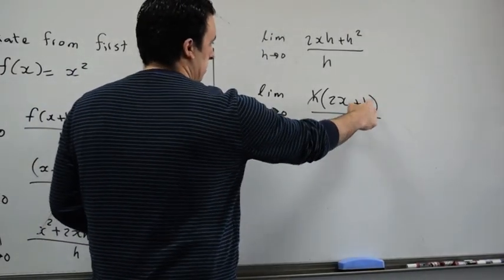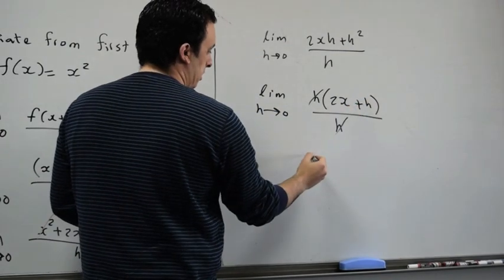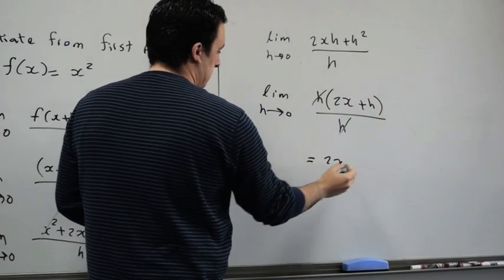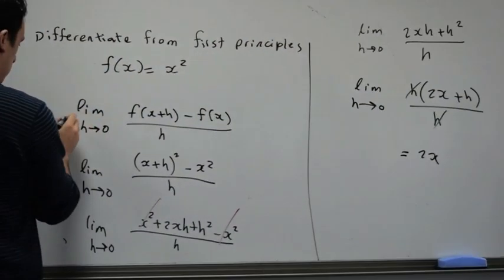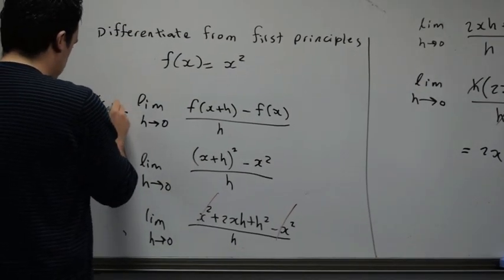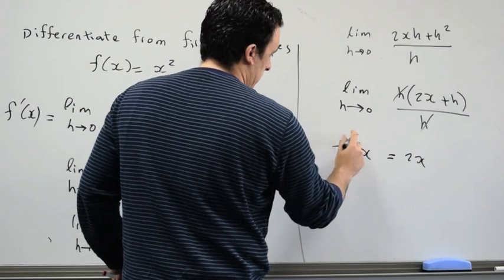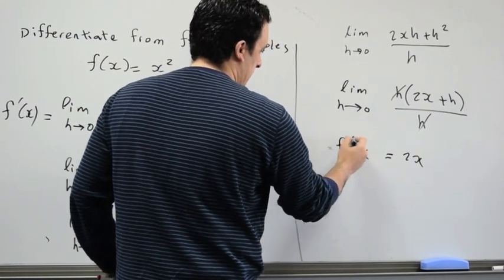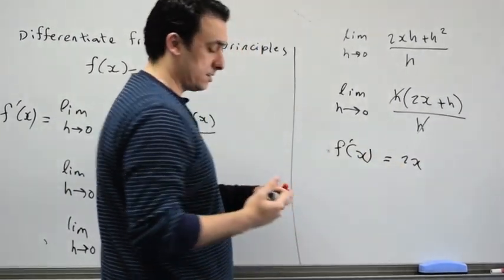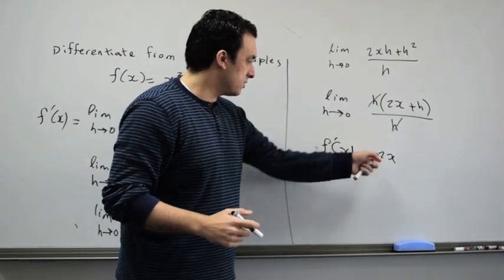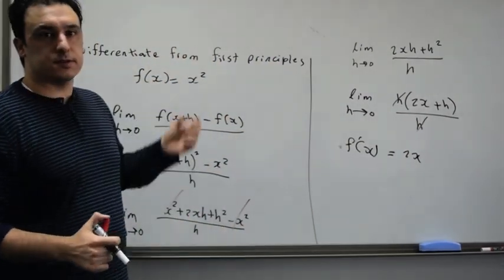So when you substitute 0 for h, you will end up with 2x, and that would be the derivative of f(x). And that is the derivative f'(x) = 2x. f'(x) is 2x when f(x) is x².